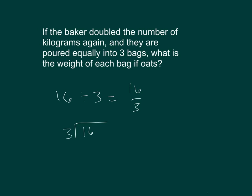16 divided by 3 is equal to 5. 5 times 3 is 15. 16 minus 15 is 1, so our remainder is 1, which we can express as 1 third. 16 thirds equals 5 and 1 third.